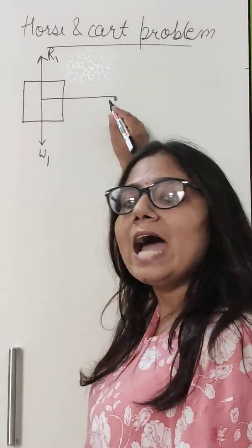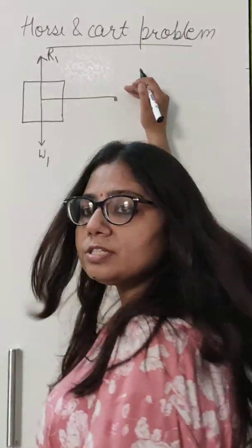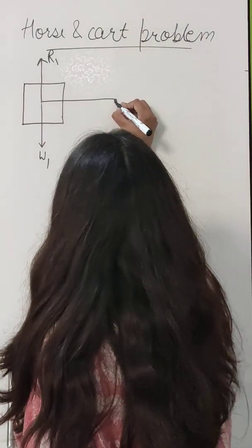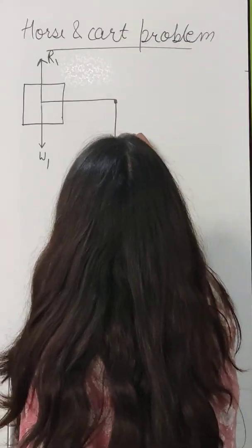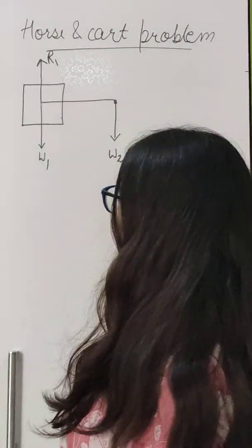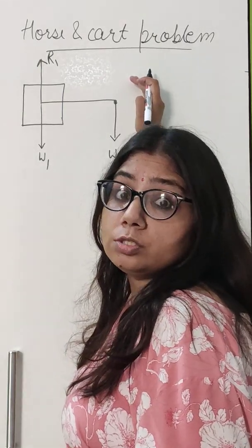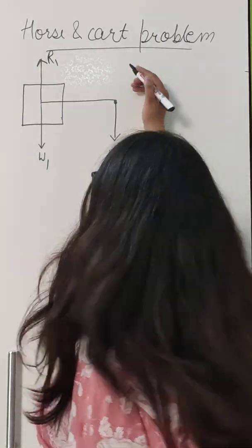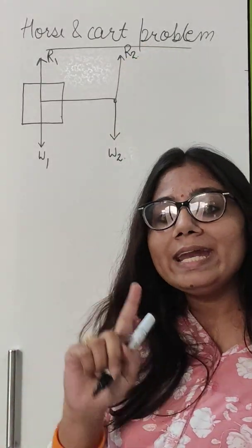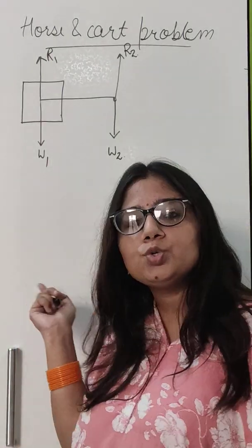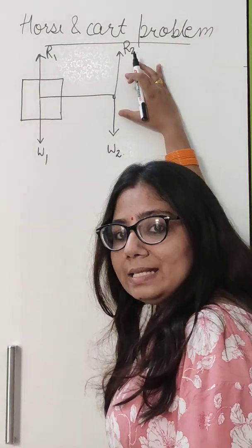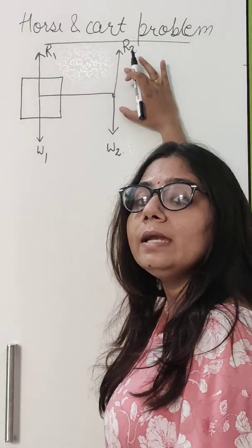In a similar way, I will show for the horse. The horse is exerting force on the ground in the downward direction equal to its weight. The weight of the horse, W2, is acting vertically downwards. The ground is also exerting force on the horse in the upward direction, represented by reaction force R2. R1 and R2 are reaction forces and W1 and W2 are weights. These two forces are also equal and opposite.